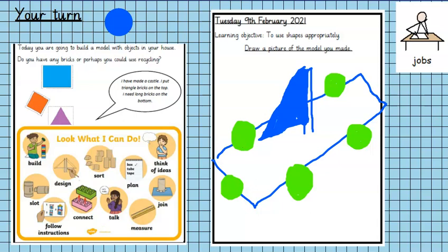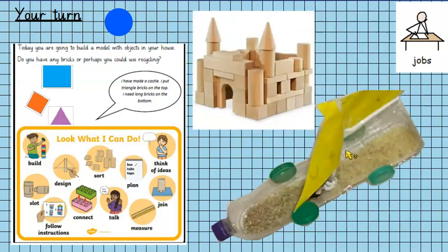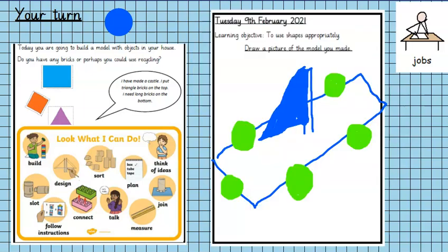I want you to draw a picture of the model that you made. So, here is a photograph of the boat that I made, and here is the quick picture that I've drawn. The most important thing about my picture is not that it's the most artistic picture ever, but that it is a picture where you can clearly see the shapes that I have used.